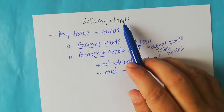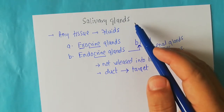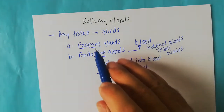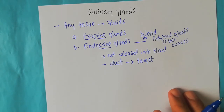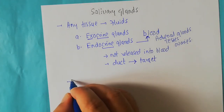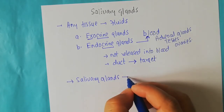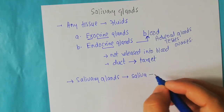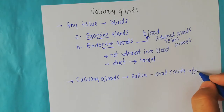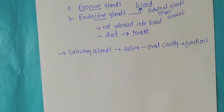When you talk about the salivary glands, they fall into the category of exocrine glands. The salivary glands release their fluids, and those fluids reach the oral cavity utilizing a specialized duct system. Therefore we put them under the category of exocrine glands.